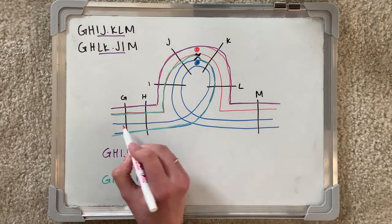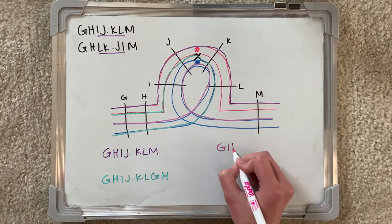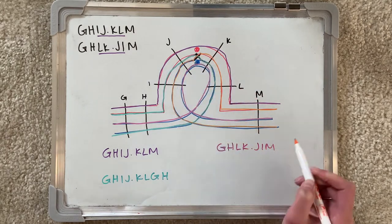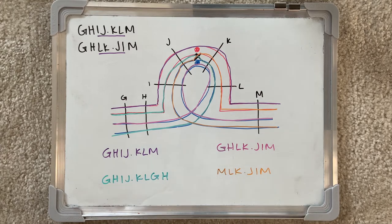As you can see, the purple and pink chromosomes are identical to the starting sequence. However, the green chromosome has an extra G and H, and is missing M. The orange chromosome has an extra M, and is missing G and H.